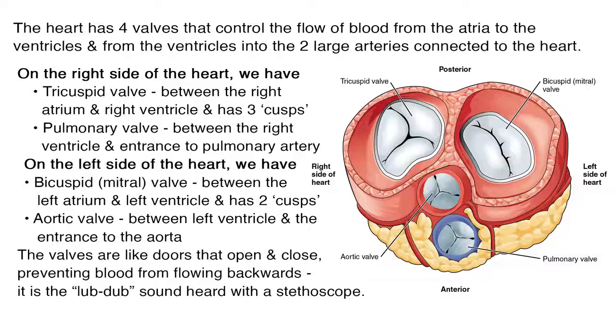The heart has four valves that control the flow of blood from the atria into the ventricles and from the ventricles into the two large arteries connected to the heart. On the right side of the heart, we have the tricuspid valve, which is between the right atrium and the right ventricle and has three cusps. There is also the pulmonary valve between the right ventricle and the entrance to the pulmonary artery.